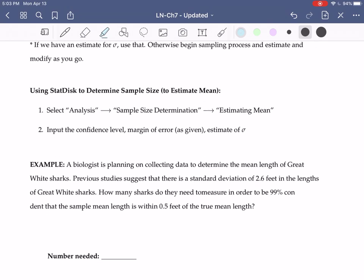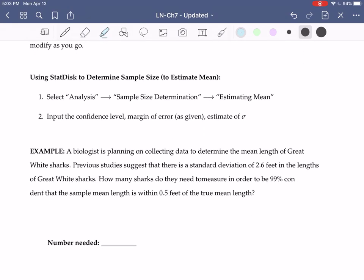Let's take a look at how we would do this in StatDisk. In StatDisk, we choose Analysis, there's an option there for Sample Size Determination, and we are trying to estimate a mean, so we choose that.